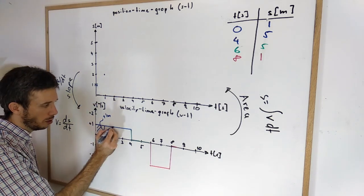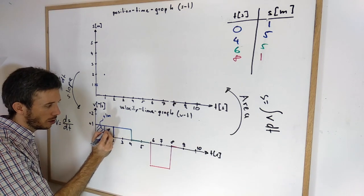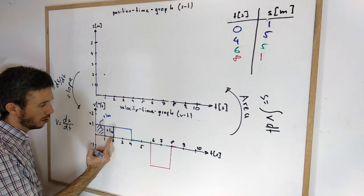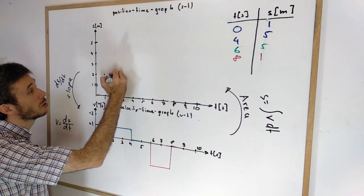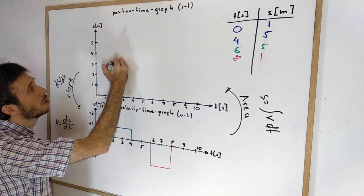And I go on from 1 to 2. Well this is another 1 meter. 1 second times 1 meter per second plus another 1 meter. So at 2 I'm at 3.